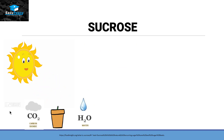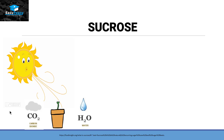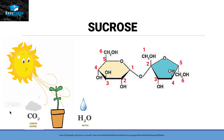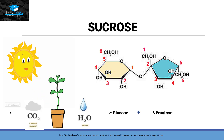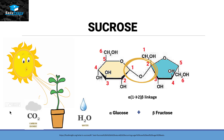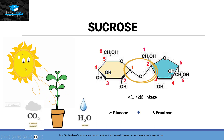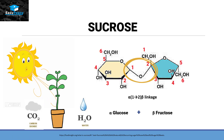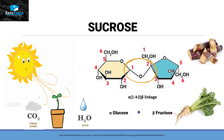The next disaccharide we are going to talk about is sucrose. Sucrose is usually present in plants, seeds, and fruits. If we look at the structure of sucrose, we can see that it is made up of two monosaccharides: one alpha-glucose and one beta-fructose. The bond they form is called an alpha-1,2-beta linkage, because carbon number one of alpha-glucose reacts with carbon number two of beta-fructose. Sucrose is commercially made from sugar cane and sugar beets.